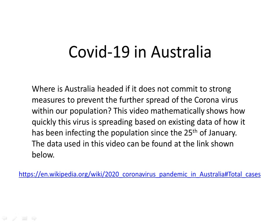I'm making this video on the spread of COVID-19 in Australia, to show where Australia is headed if it does not commit to strong measures to prevent the further spread of this virus. This video is showing mathematically how quickly this virus can spread, based on existing data which is in the public domain.